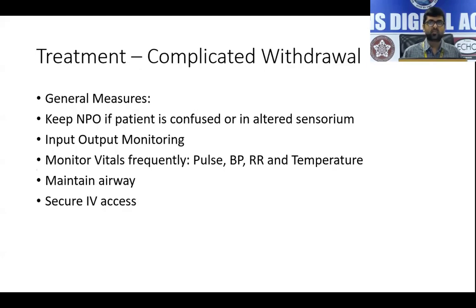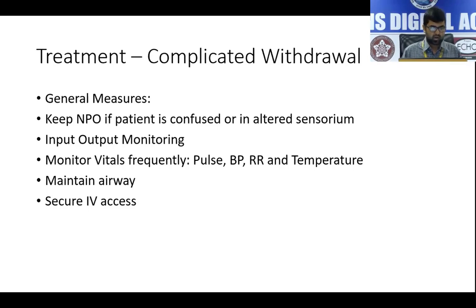Complicated withdrawal, as Professor Pratima mentioned, mainly comprises seizures and delirium tremens. General measures for treatment are largely the same. Keep the person nil per oral if confused or with altered sensorium, given the high aspiration risk. If possible, do input-output monitoring and monitor vitals frequently. In complicated withdrawal it is preferable to monitor vitals at least once every hour, with a minimum of once every two hours. Maintain the airway and secure IV access.